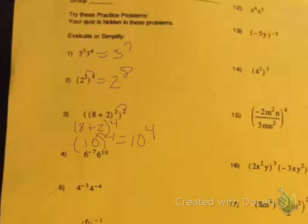Number 4, we're multiplying again, so we're going to add the exponents. Our base stays 6, and negative 7 plus 10 is 3.